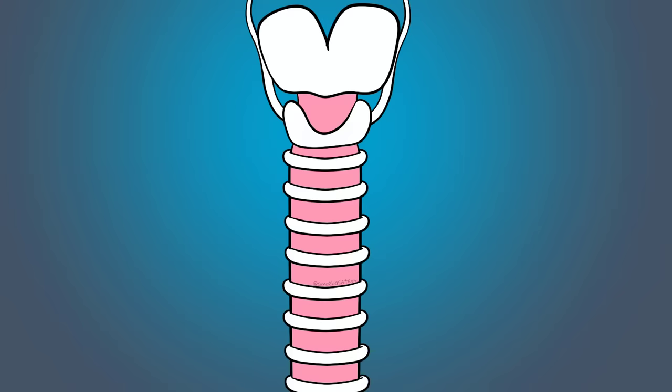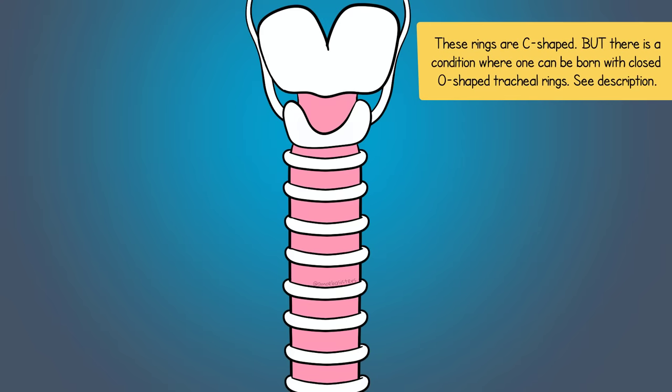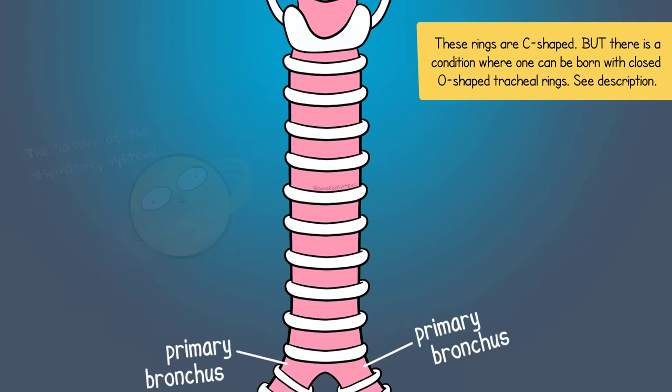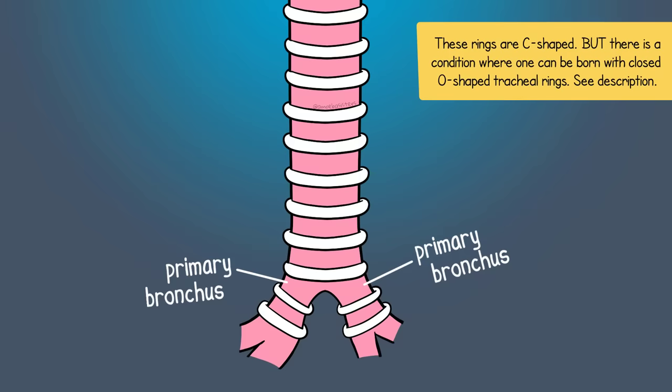The trachea is a pretty fascinating cylinder tube with rings of cartilage. That cartilage helps support the trachea and keep it open for air to travel through. The trachea goes down to the primary bronchi.